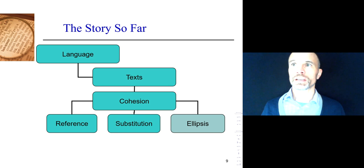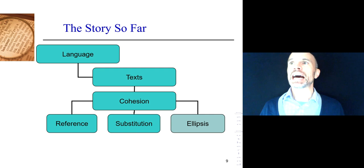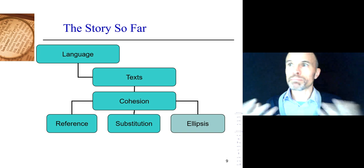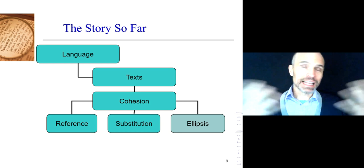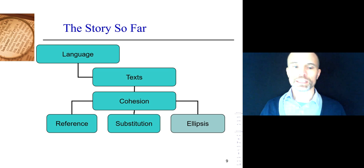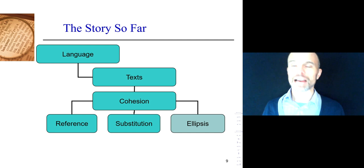Ellipsis fits in at this level: we've got language, and language is composed of what linguists call texts — certain amounts of language, either spoken or written, that belong together. How do we know it makes up one text? Because there are cohesive properties. Someone's talking to you and a song is playing, and you don't see that as one big jumble — you recognize those as two separate texts because of the cohesive properties. From your studies, you'll be familiar with reference and substitution as two types of cohesion, and today we're talking about ellipsis, which exists at that same level.